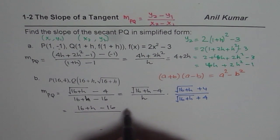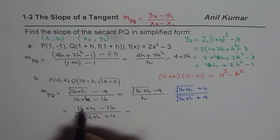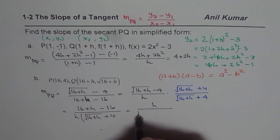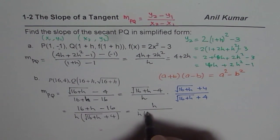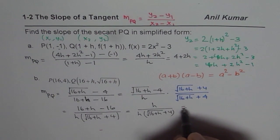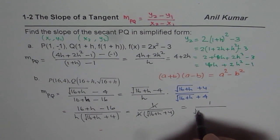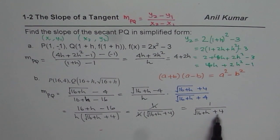Denominator is h times (√(16+h)+4). Now numerator reduces to h, denominator we have h times (√(16+h)+4). h and h cancel out, so we have 1 over (√(16+h)+4). So that is the simplified version for the second part. So the slope of the secant is 1/(√(16+h)+4). Thank you.